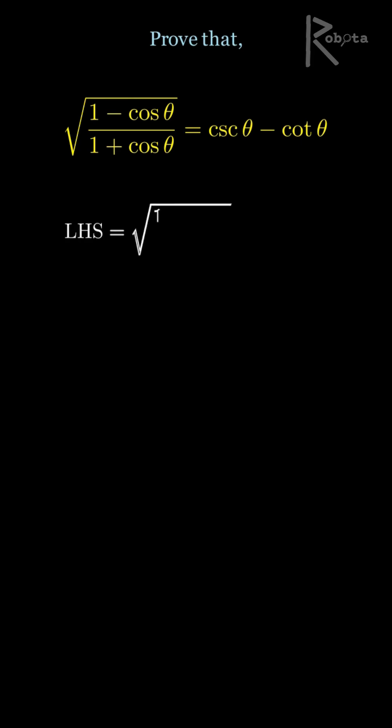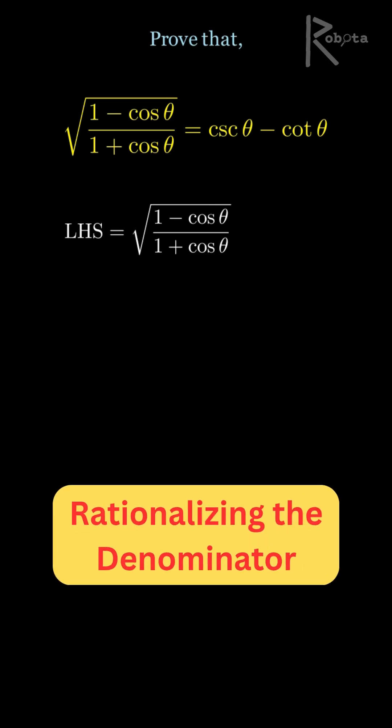Start with the left-hand side of the equation, which is the square root of 1 minus cos theta divided by 1 plus cos theta. Now we simplify it. To do that, we multiply both the numerator and the denominator by 1 minus cosine theta. This is a technique called rationalizing the denominator.